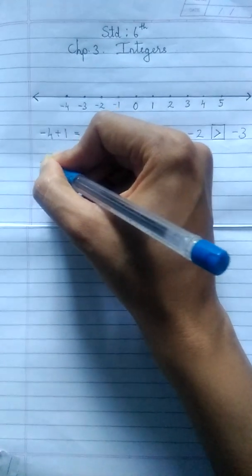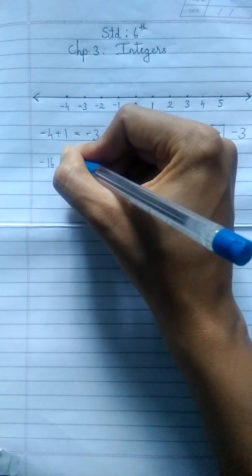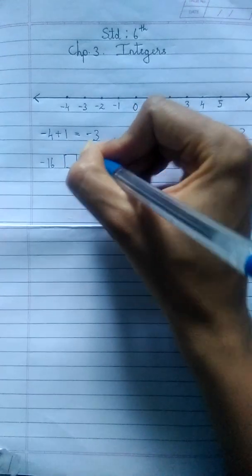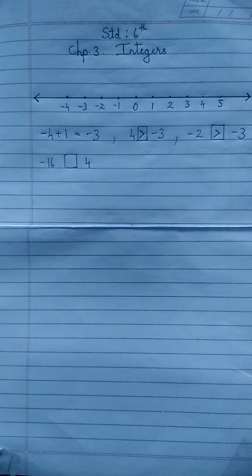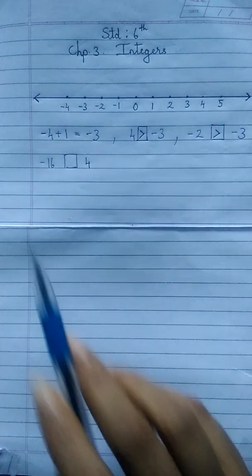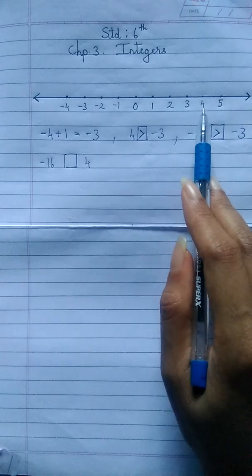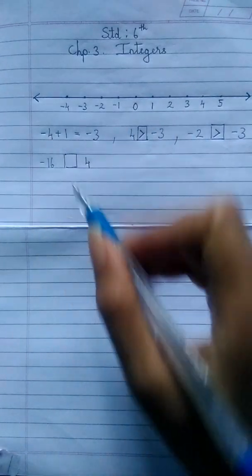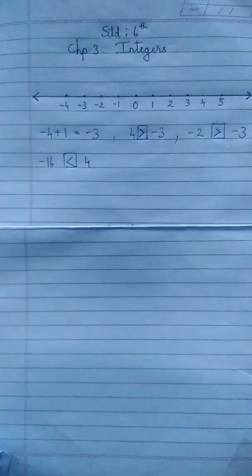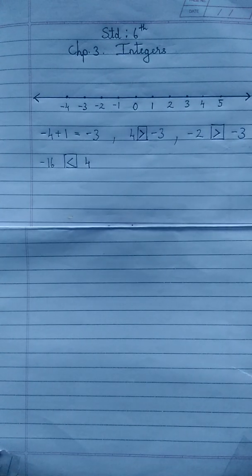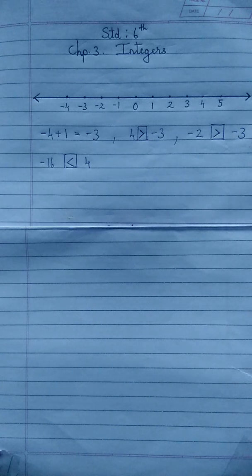If I say compare minus 16 and 4, you can't see minus 16 directly, but you can visualize that minus 16 will definitely fall to the left on the number line, whereas 4 will be on the right. So we can say 4 is greater and minus 16 is less than 4. This way you can compare integers. The numbers on the right of the number line will be greater than those on the left — just visualize the number line in your mind.